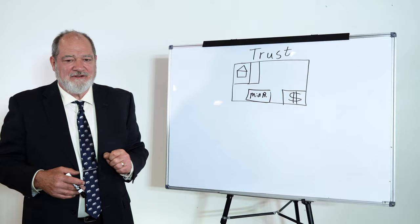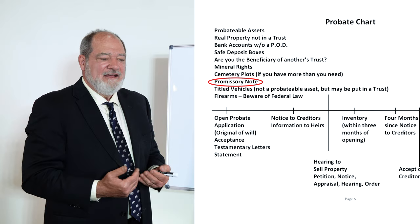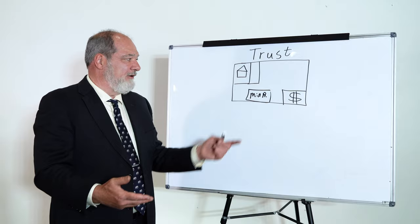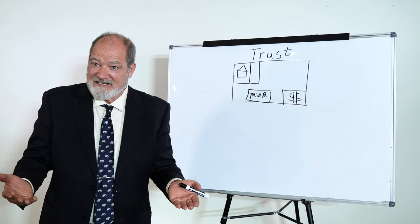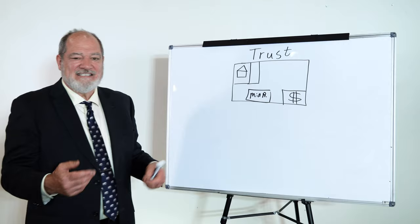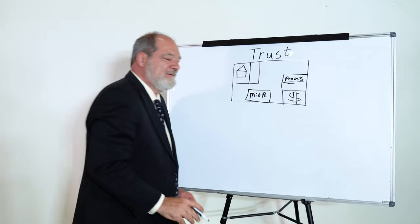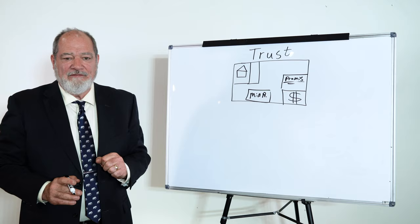The next issue is promissory notes. A promissory note, let's say you sell some property and you carry the contract. You have a promissory note that's secured by a deed of trust. That promissory note is a probatable asset because when you pass away, the person has to make out a check to someone. If they make it out to you, you're going to have to have testamentary letters in order to cash that check or deposit it. Instead, what we do is we assign that promissory note that's secured by a deed of trust into the trust.